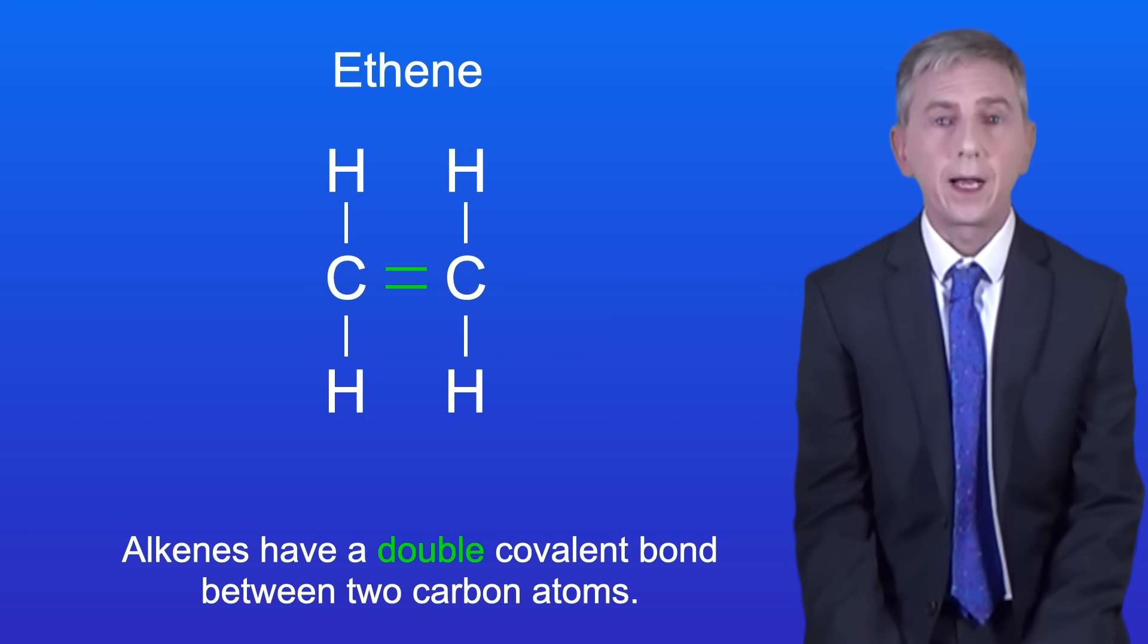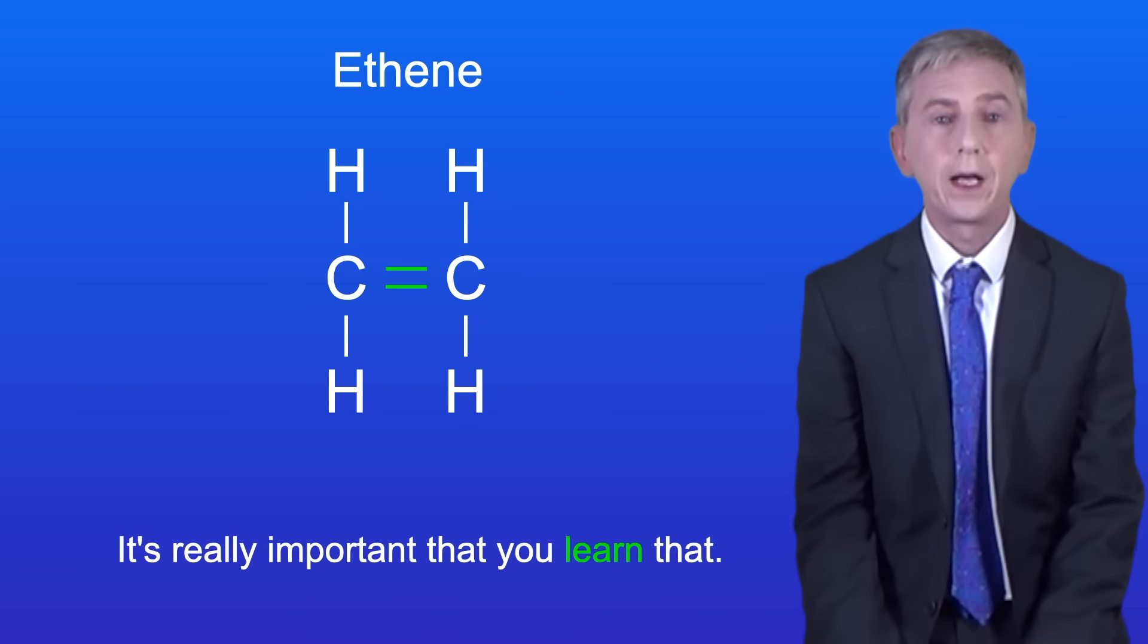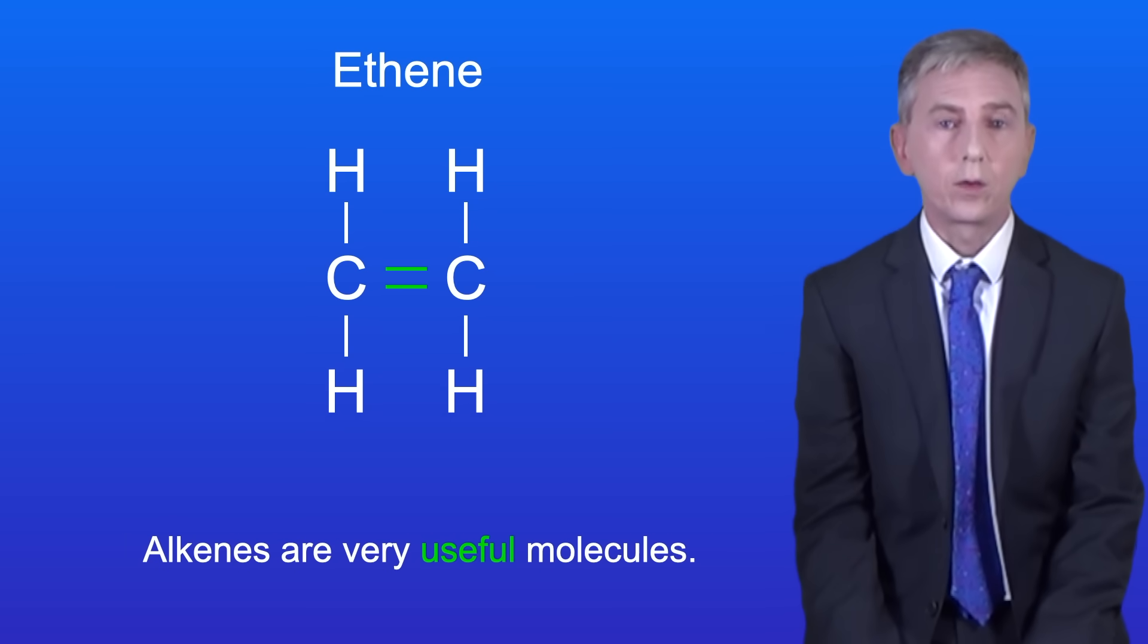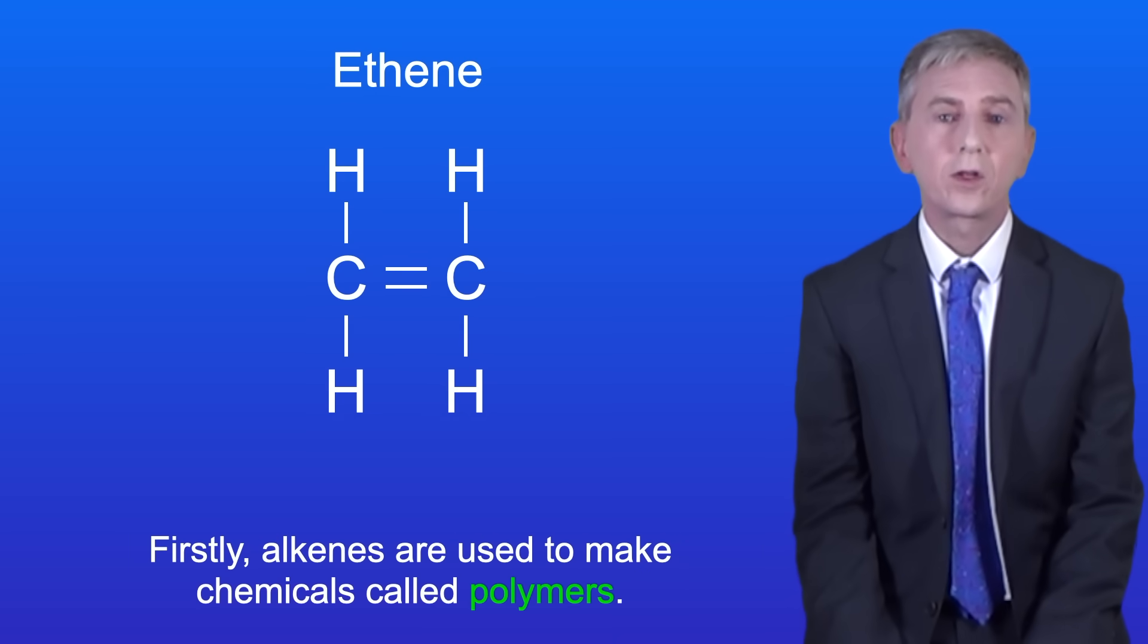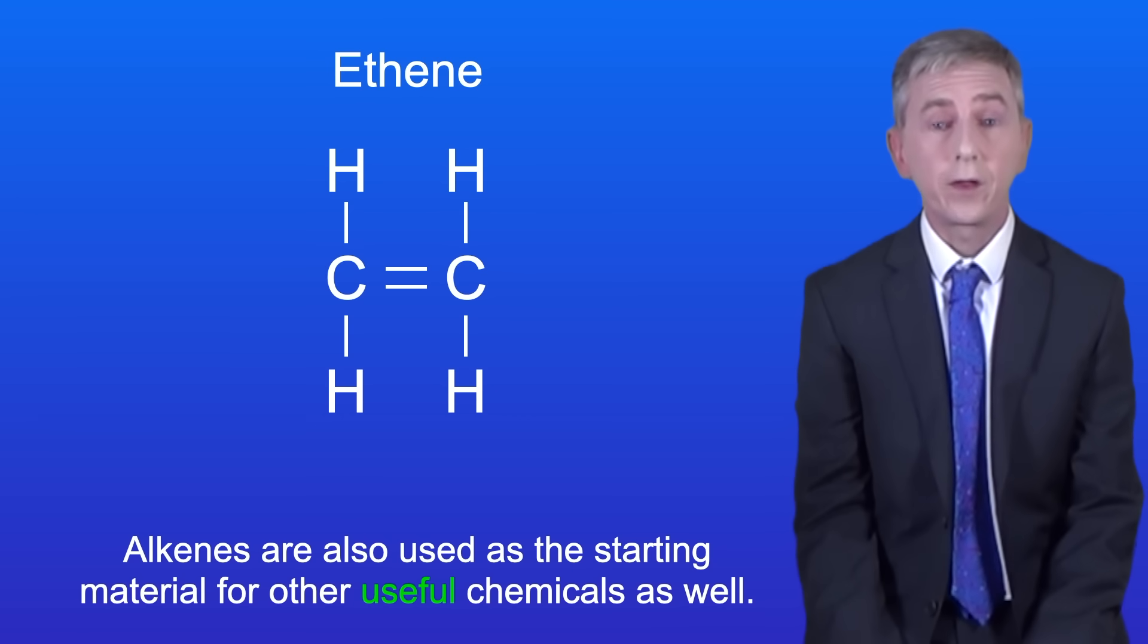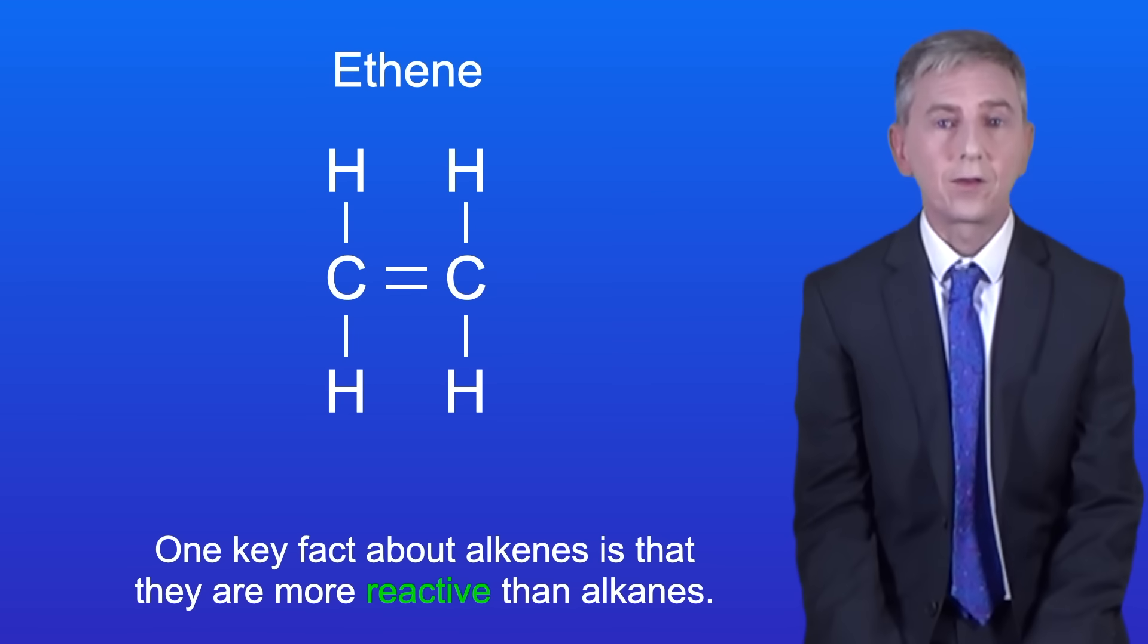Now as you can see alkenes have a double covalent bond between two carbon atoms and it's really important that you learn that. Alkenes are very useful molecules and in the exam you could be asked why. Firstly alkenes are used to make chemicals called polymers. Alkenes are also used as a starting material for other useful chemicals as well. Now one key fact about alkenes is that they're more reactive than alkanes.